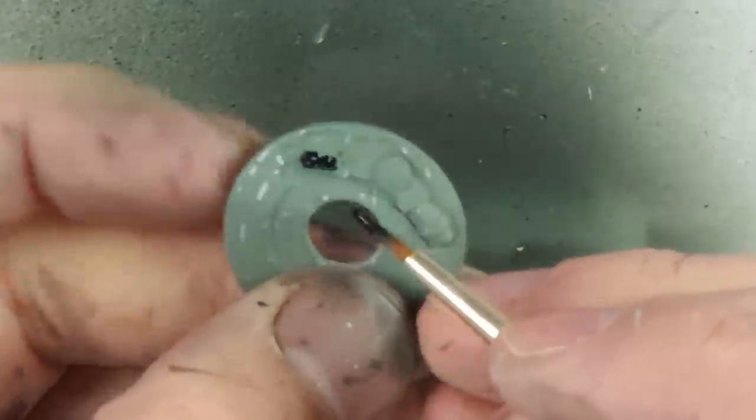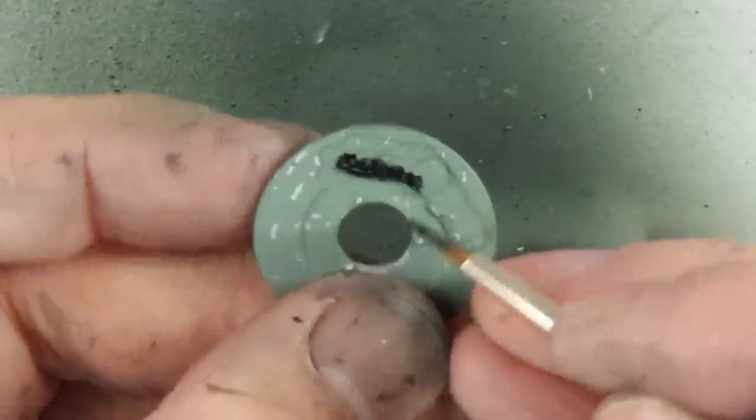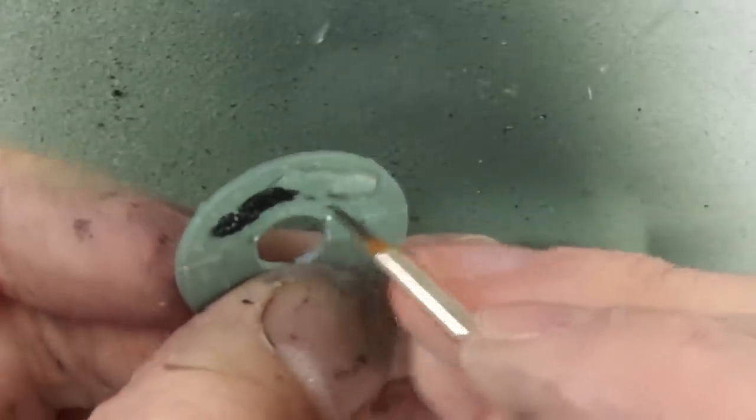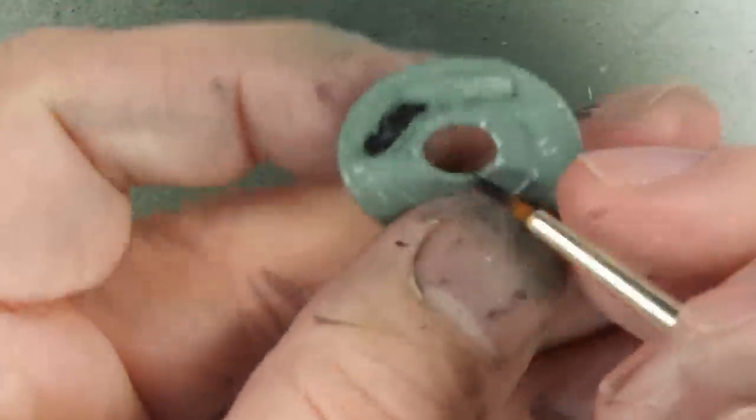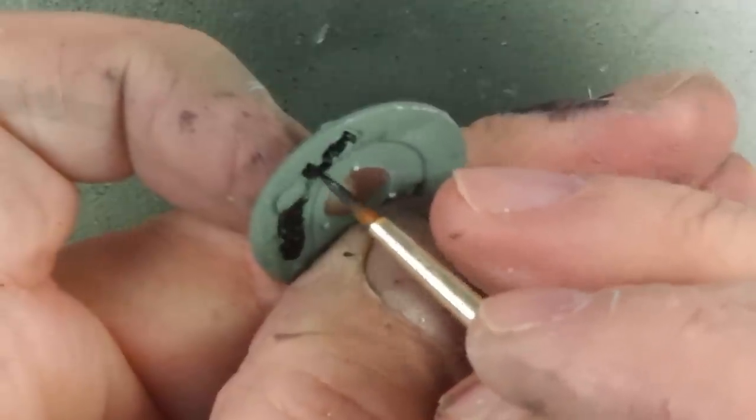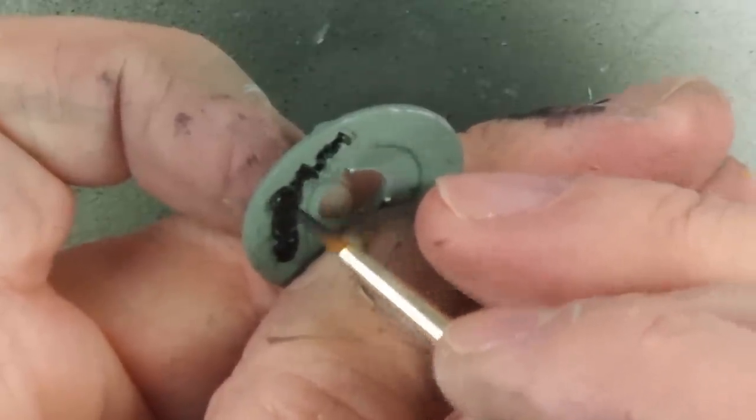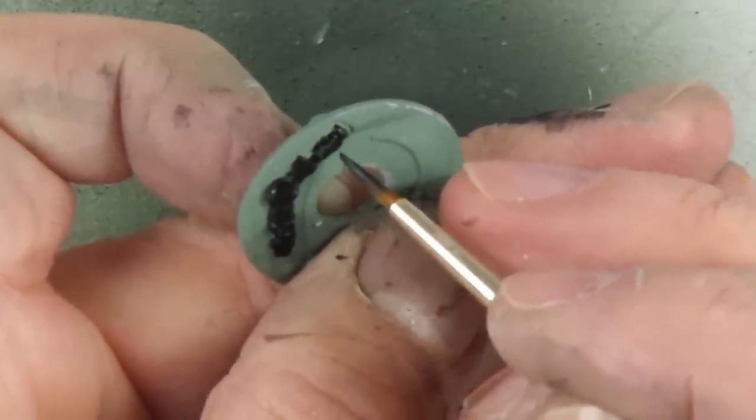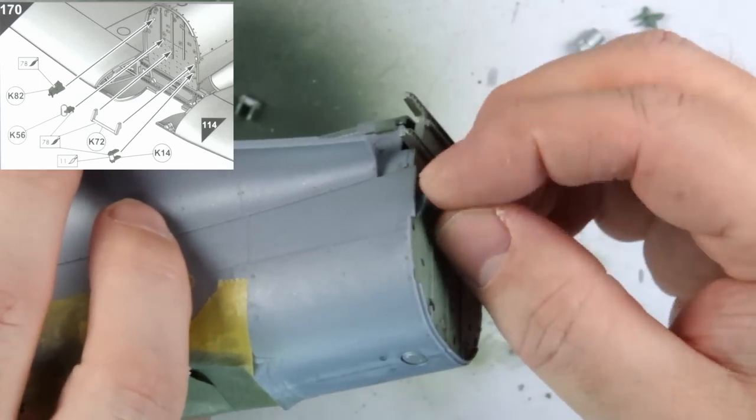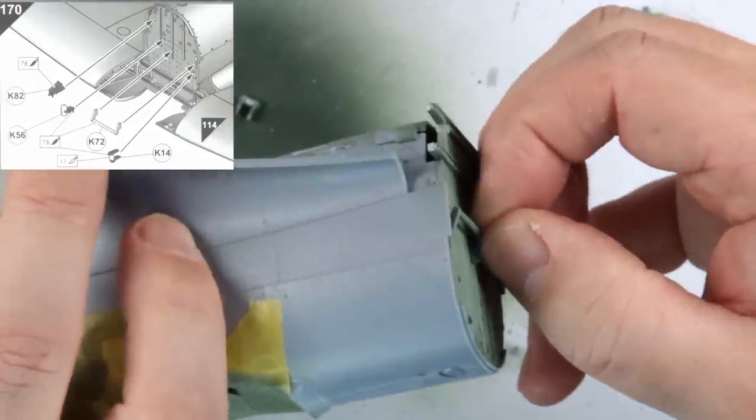Some pieces do require some detail painting or different colors, like the cooler pipes, which are brass, and various pieces that are black, such as the part of the fuselage behind the spinner I'm painting. Once the parts are all suitably painted and chipped, we can go back to the assembly sequence at step 170 and add these pieces to the main engine firewall.